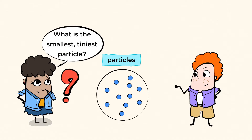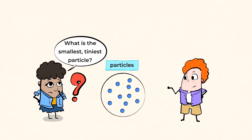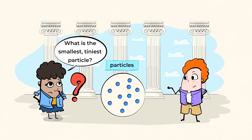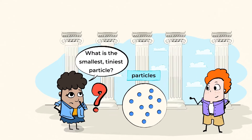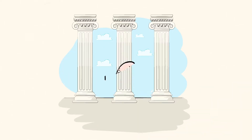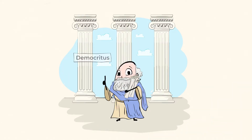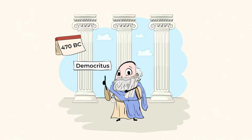Well, to explore this, we need to take a trip back in time to ancient Greece. Come on and dive in with me. This is Democritus. He was a philosopher who lived in Greece around 400 BC. And that is a long time ago.